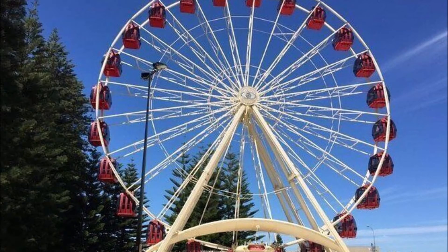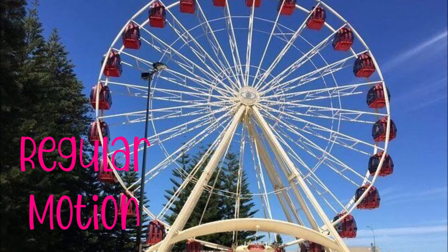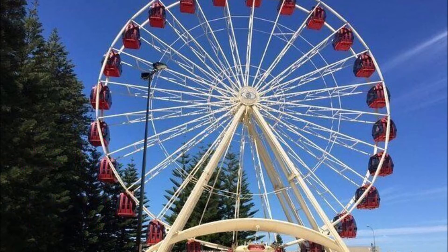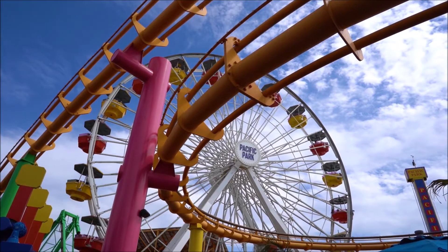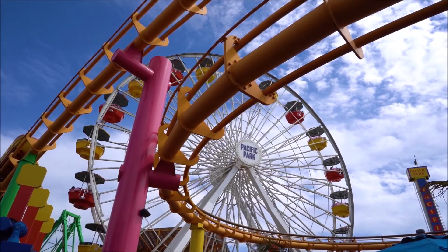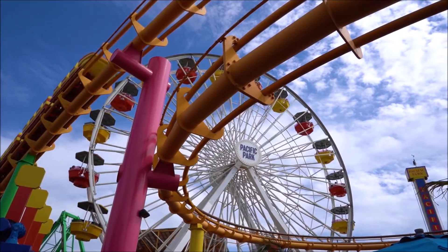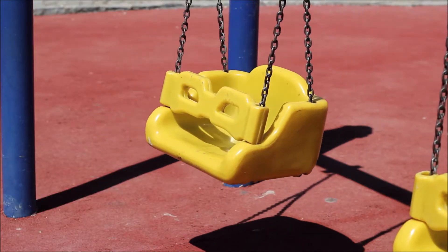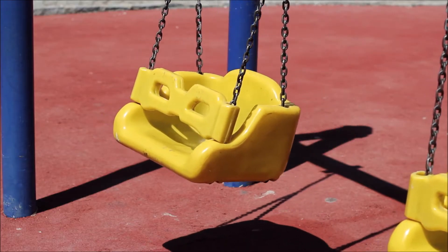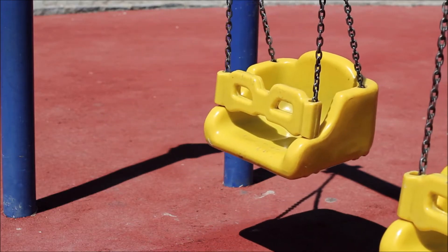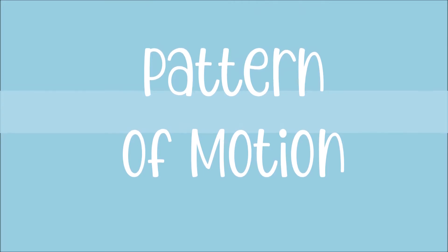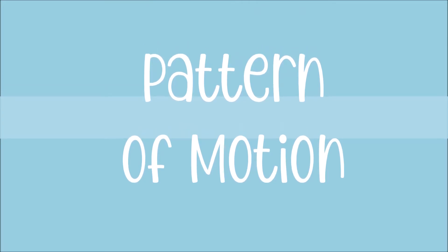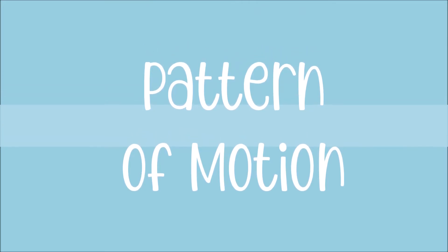A Ferris wheel is a great example of regular motion. Take a look at how the Ferris wheel follows a pattern — it goes around and around. A swing set swing will always go back and forth. That's because these objects follow a pattern of motion. The motion that they put out is predictable.